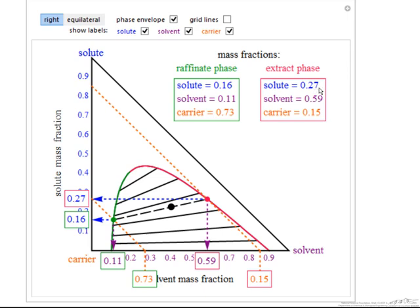The idea is that we've obtained a higher concentration of solute in the extract phase. In one stage, we would normally have to do multiple stages to remove more of the solute from the carrier.